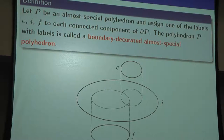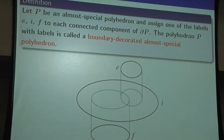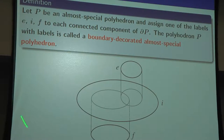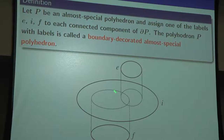Now, decoration: let P be an almost special polyhedron and assign one of the labels E, I, or S to each connected component of the boundary of the polyhedron. Such a polyhedron with labels is called a boundary-decorated almost special polyhedron. Here is a picture of a polyhedron with one, two, three boundary components, and I label them E here, I here, and F here.